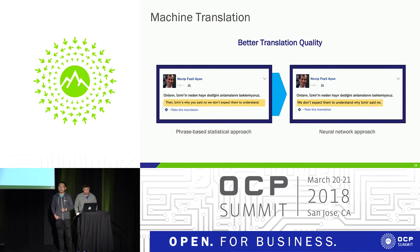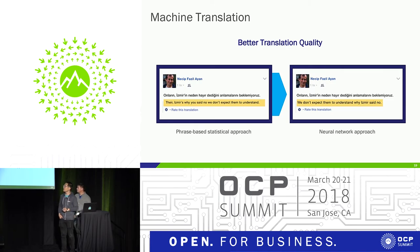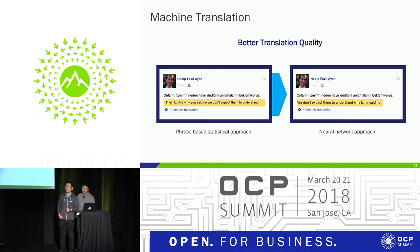Machine translation is another important machine learning workload at Facebook. We use machine translation to translate posts and comments to break the communication barrier for people who speak different languages. This slide shows an example of translating a post from Turkish to English. On the left side, we show a phrase-based statistical approach used previously. Although it can translate Turkish to English word-by-word accurately, the final English sentence is not very user-friendly or easy to understand.